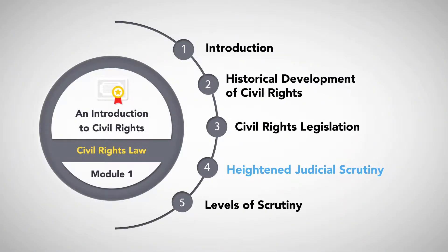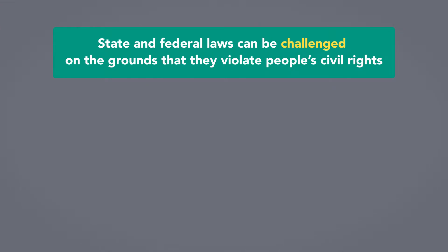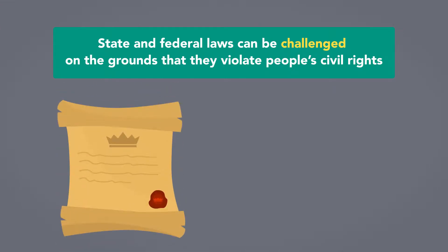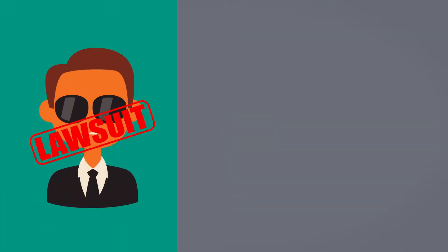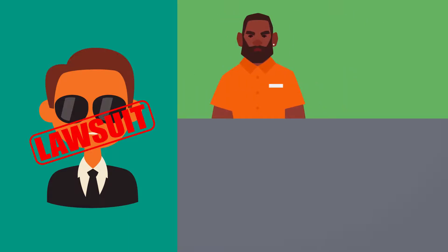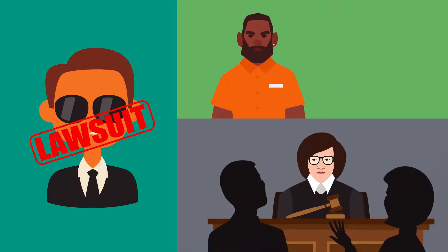Heightened Judicial Scrutiny. State and federal laws can be challenged on the grounds that they violate people's civil rights, including their rights to equal protection, due process, or more specific rights such as the rights to free speech and religion. These challenges can take the form of lawsuits to stop government agents from enforcing a law, challenges to criminal convictions based on such laws, or civil lawsuits for damages caused by enforcement of such a law.